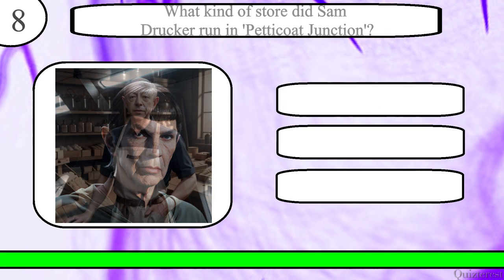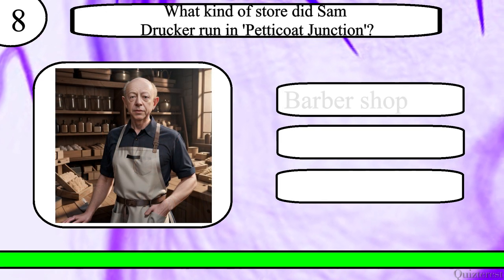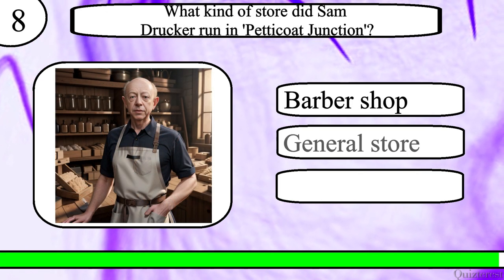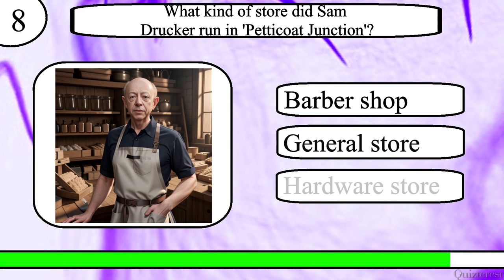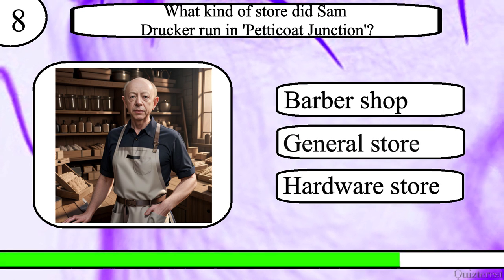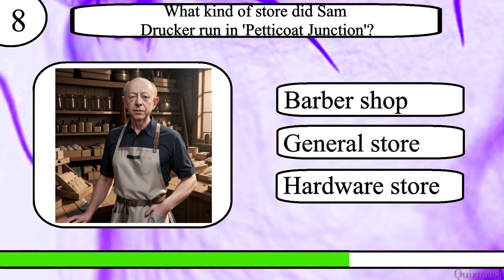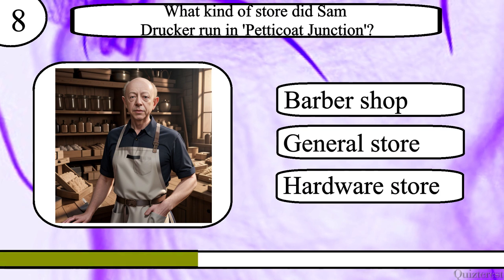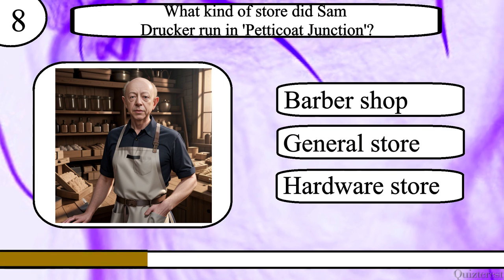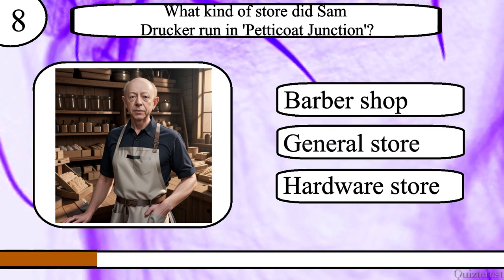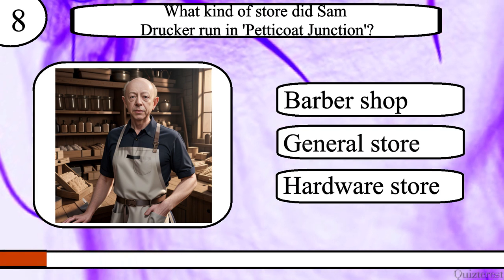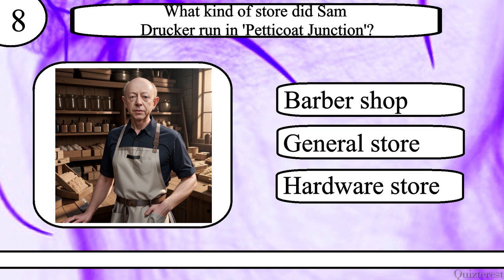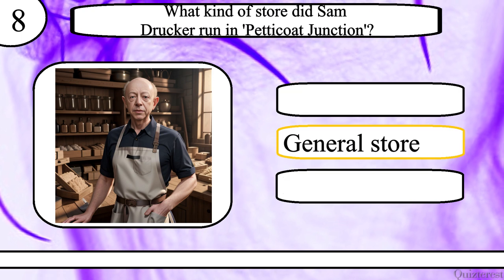Question 8. What kind of store did Sam Drucker run in Petticoat Junction? Barbershop, general store or hardware store? The correct answer is General Store.